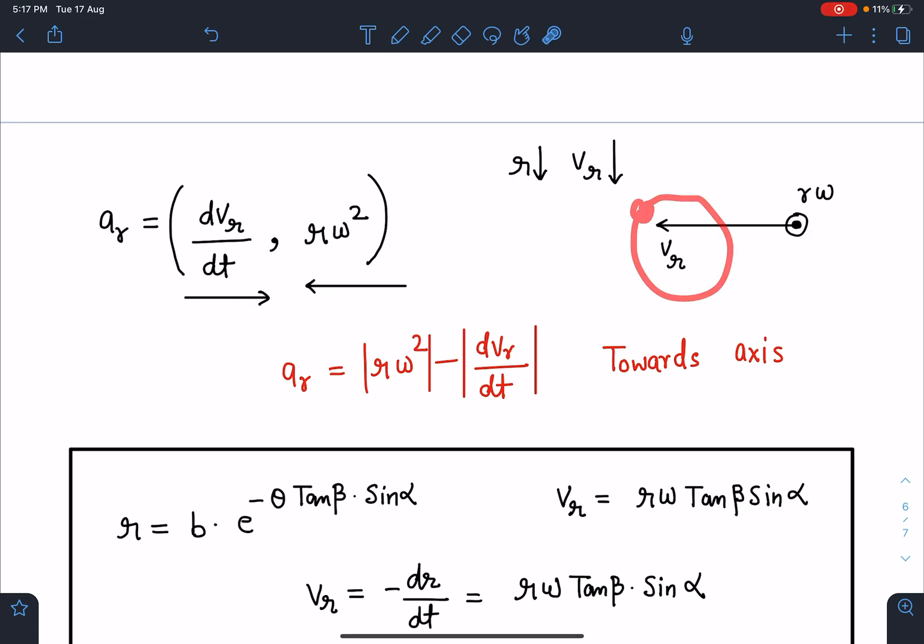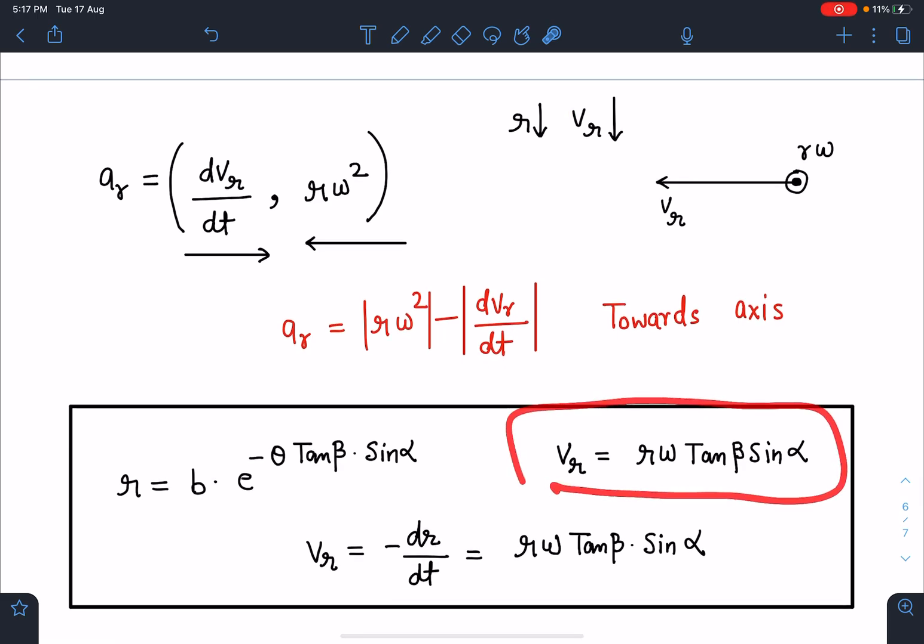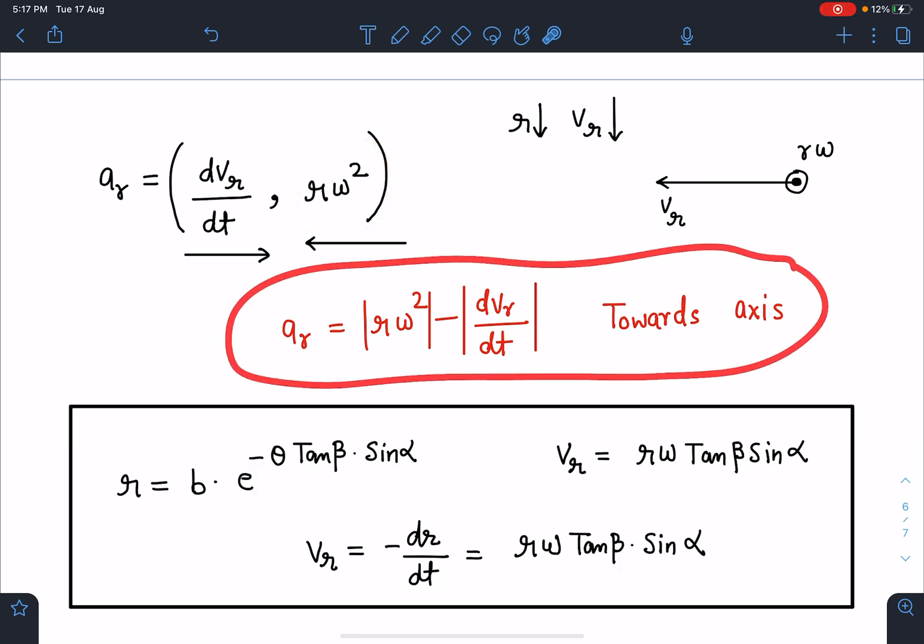But in general motion, you'll see this r distance is decreasing and V_R is a function of time. Therefore, due to this V_R, one component will come towards the axis. Here r is decreasing. V_R is rω tan β sin α - this is constant, constant, and constant. So basically V_R is decreasing with time. If V_R is pointing this way and decreasing, there must be acceleration of minus dV_R/dt away from the axis. Another is due to circular motion: rω² towards the center. Overall, radial acceleration should be rω² minus magnitude-wise dV_R/dt towards the axis.